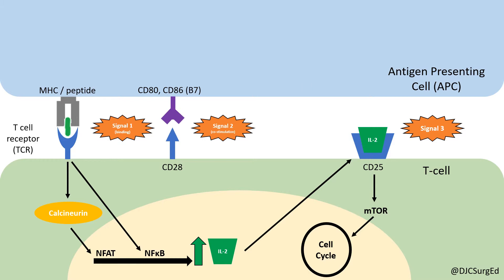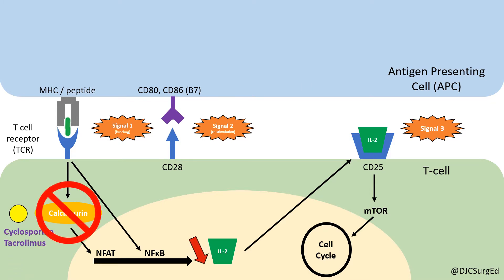Cyclosporine and tacrolimus are two calcineurin inhibitors which disrupt regulatory T-cell signaling and lead to downregulation of IL-2 production. Calcineurin is responsible for cleaving the phosphate bound to NFAT, which in its activated form promotes transcription of IL-2. Both medications are metabolized by the P450 system.